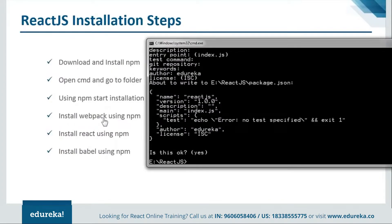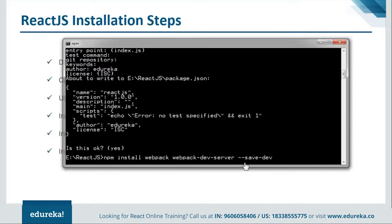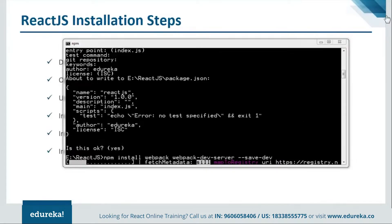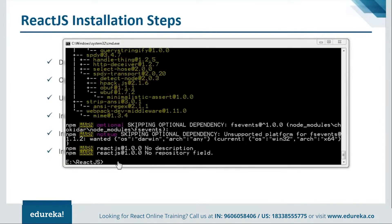The next step is to install webpack using npm. Type npm install webpack --save-dev. We use --save-dev because we want it as a developer version, not the production version. Hit Enter and it will start installing webpack. Webpack is responsible for combining all the dynamic components in our code and helps in importing data from different code files.